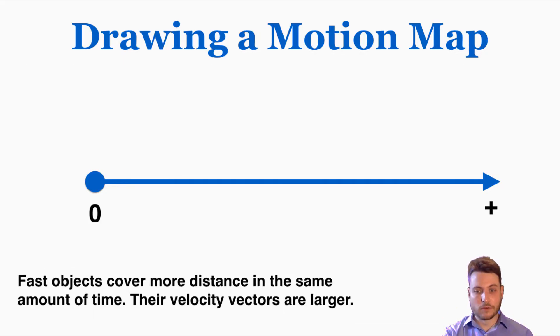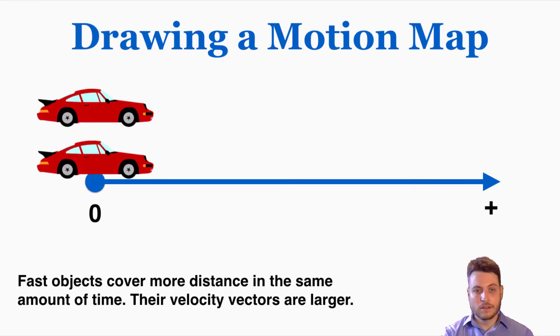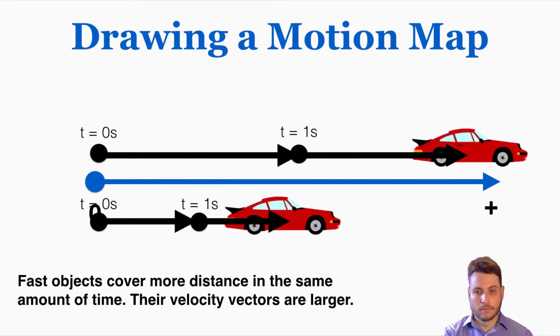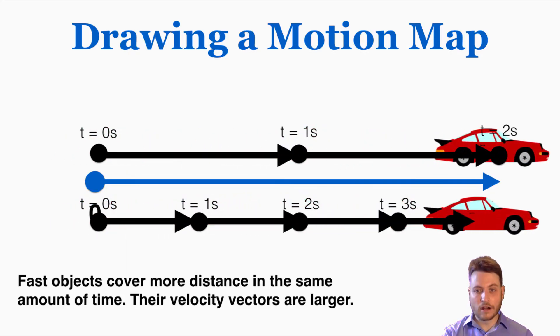So fast objects cover more distance in the same amount of time, and their velocity vectors are larger. So we can compare a faster car and a slower car like this. And you can see that if I draw a dot for every one second that passes, the faster car has larger arrows than the slower car, because the slower car is covering less distance so the dots are going to be closer together.